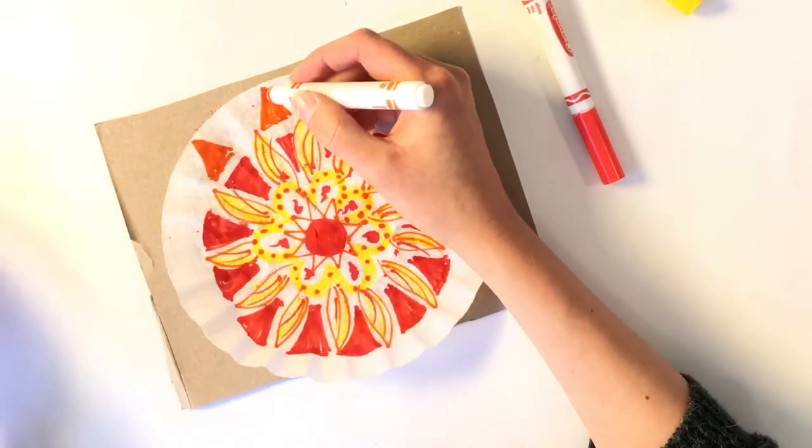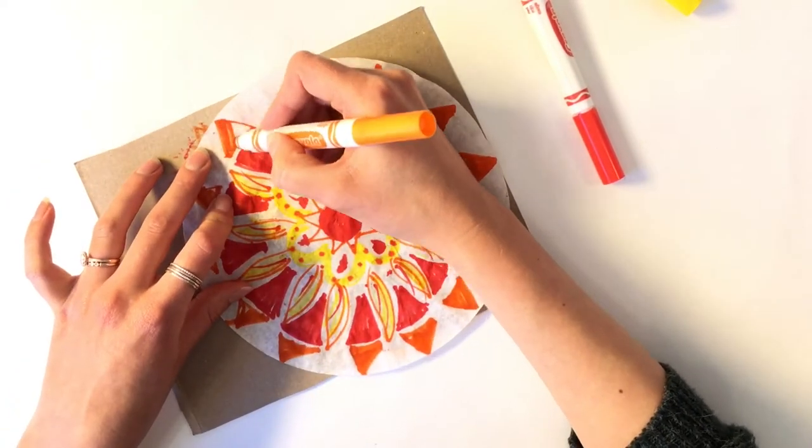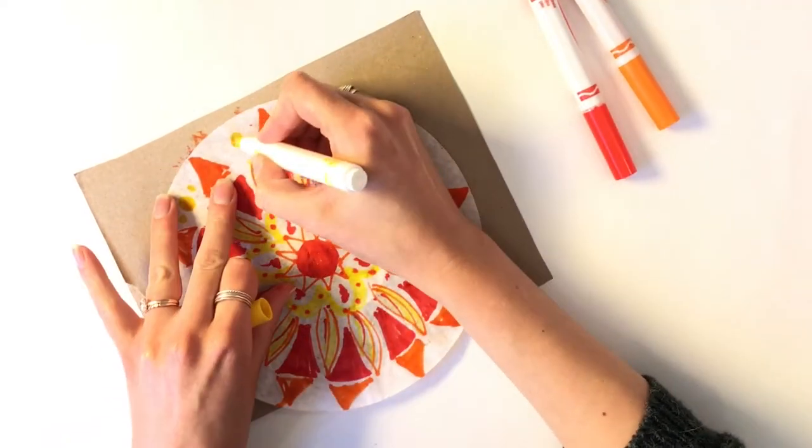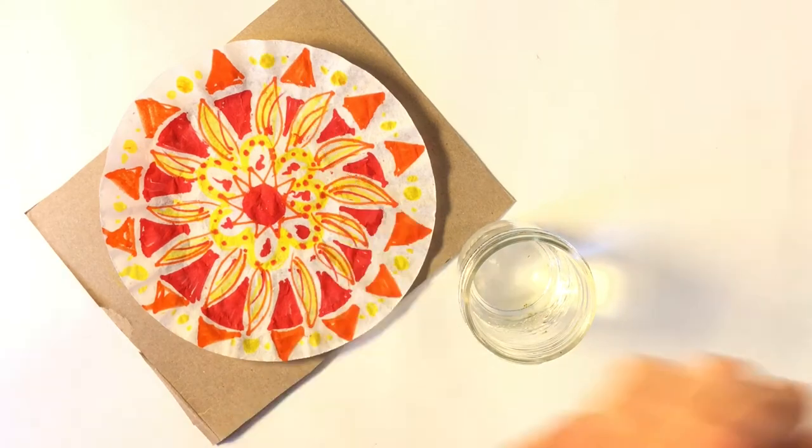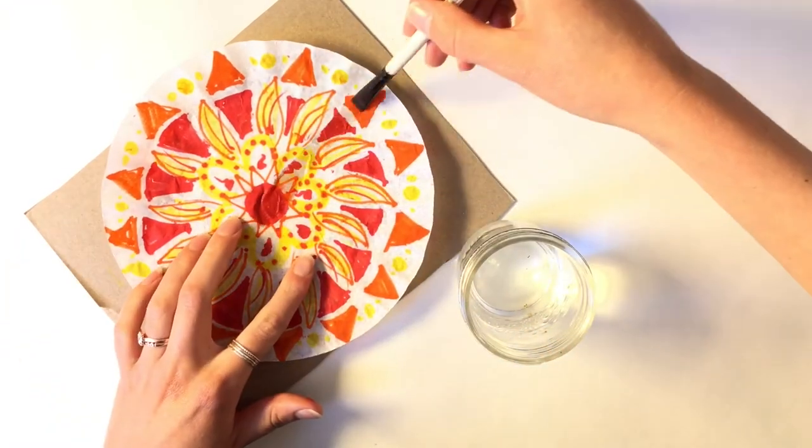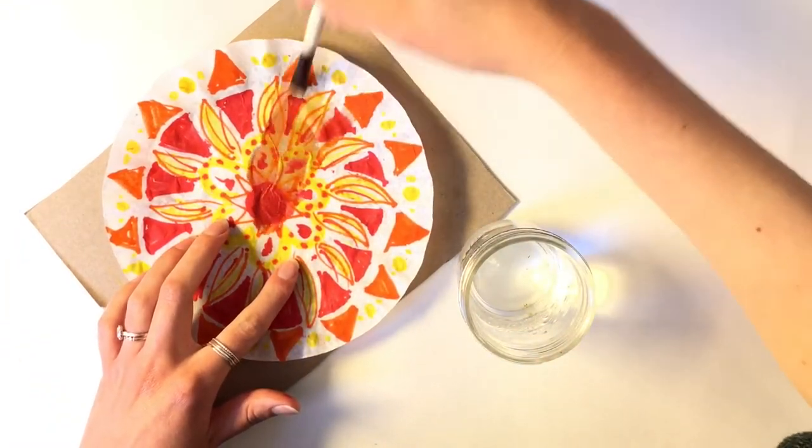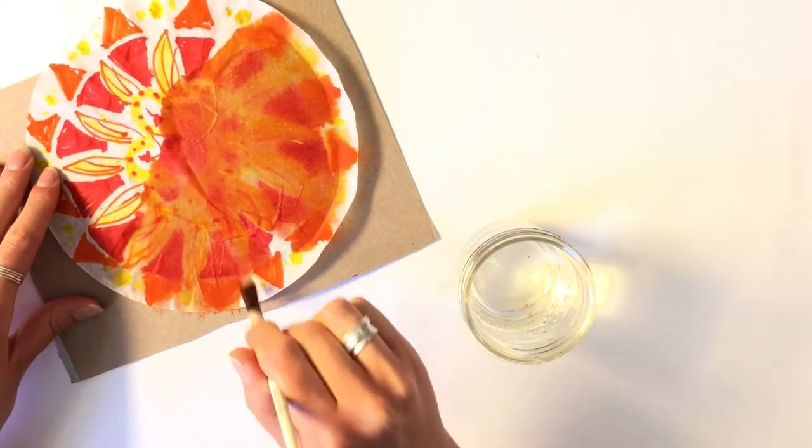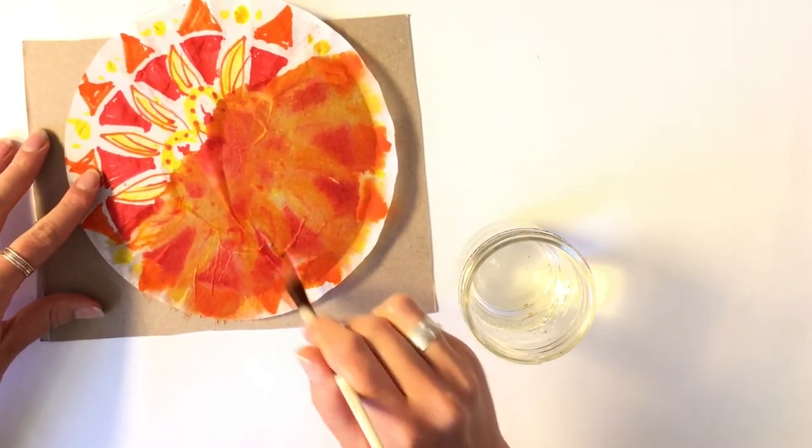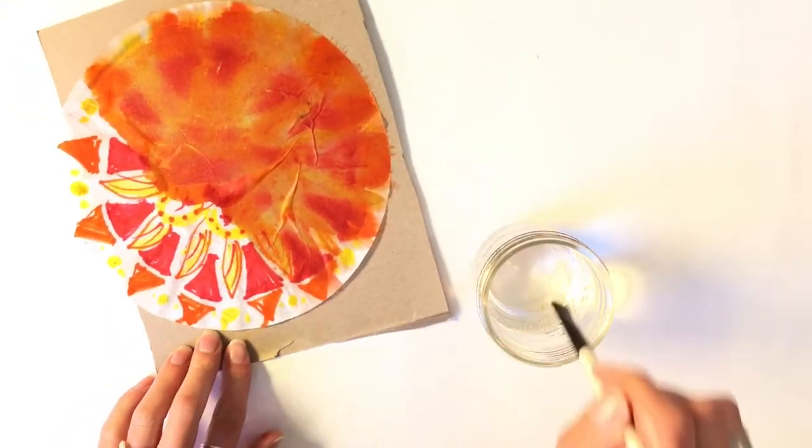Let's get started. Now with your paintbrush and water, blend the colors together with an outward motion. When you're done, set this aside to dry.